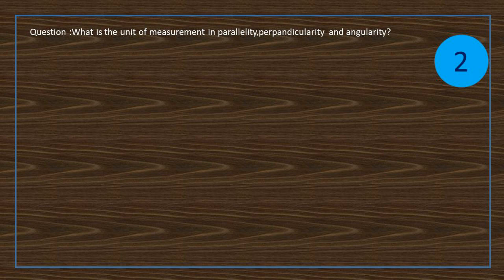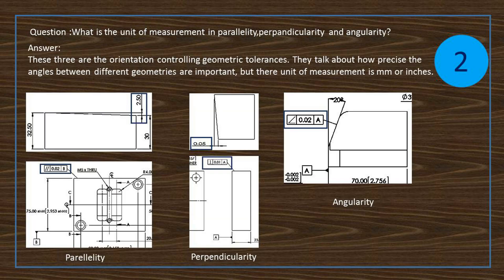Question: what is the unit of measurement in parallelism, perpendicularity, and angularity? Answer: these three are the orientation controlling geometric tolerances. They talk about how precise the angles between different geometries are, but their unit of measurement is mm or inches.